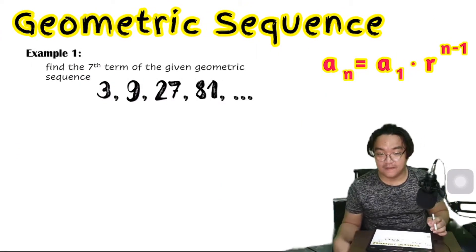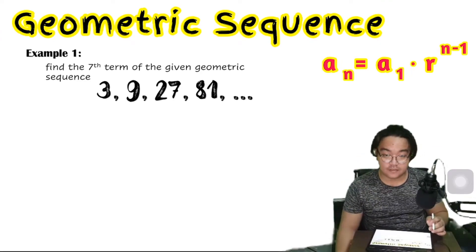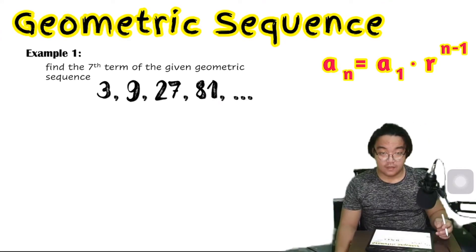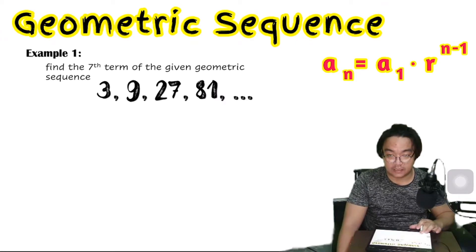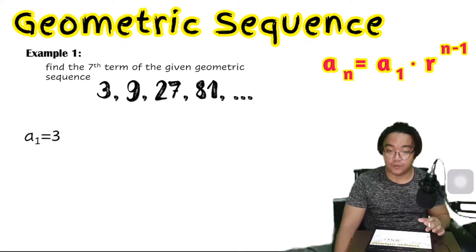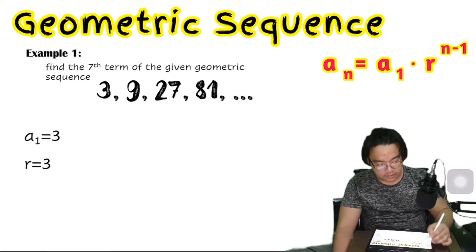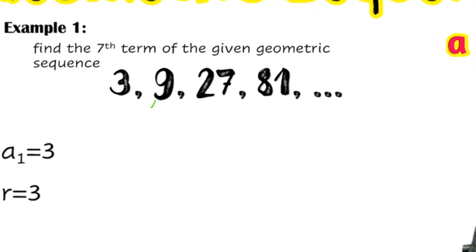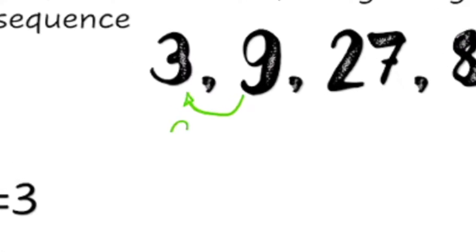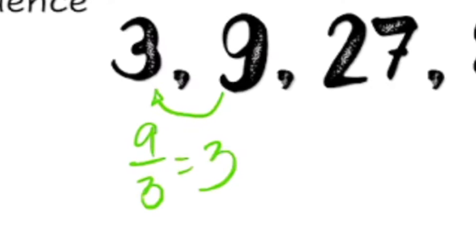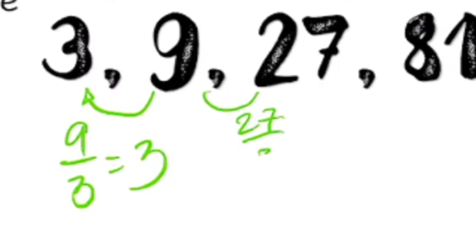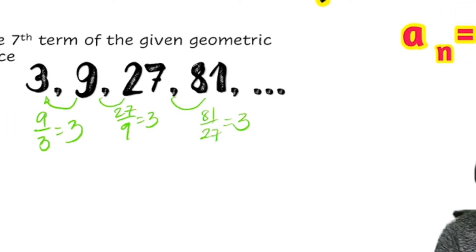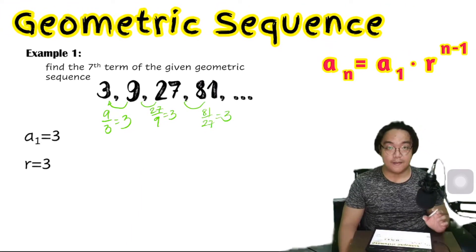Let's have an example: find the 7th term of the geometric sequence 3, 9, 27, 81, and so on. Listing our given: the first term a₁ equals 3. To find the common ratio, divide any term by its preceding term — 9 divided by 3 is 3, 27 divided by 9 is 3, and 81 divided by 27 is 3 — so the common ratio is positive 3.